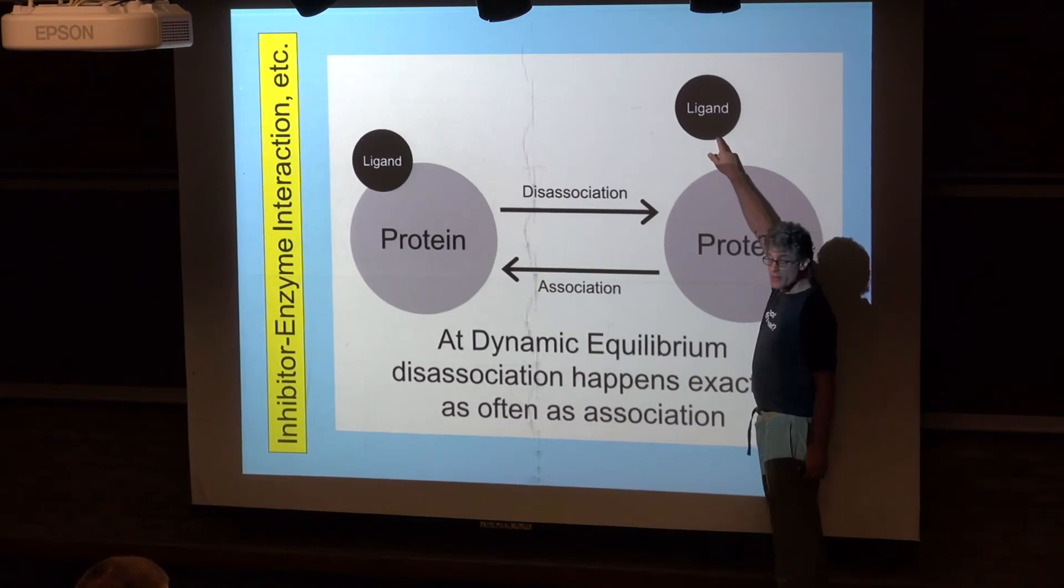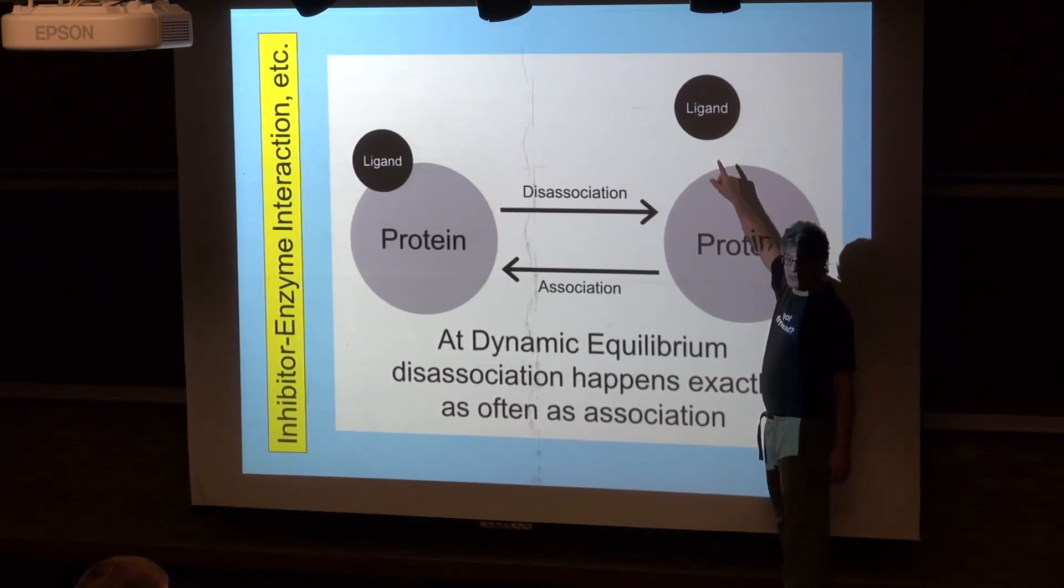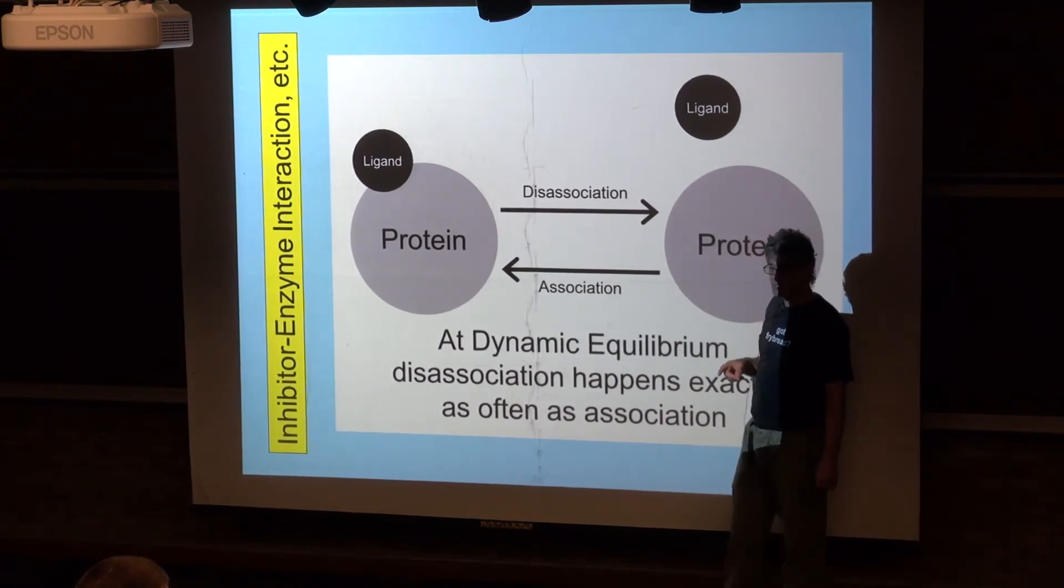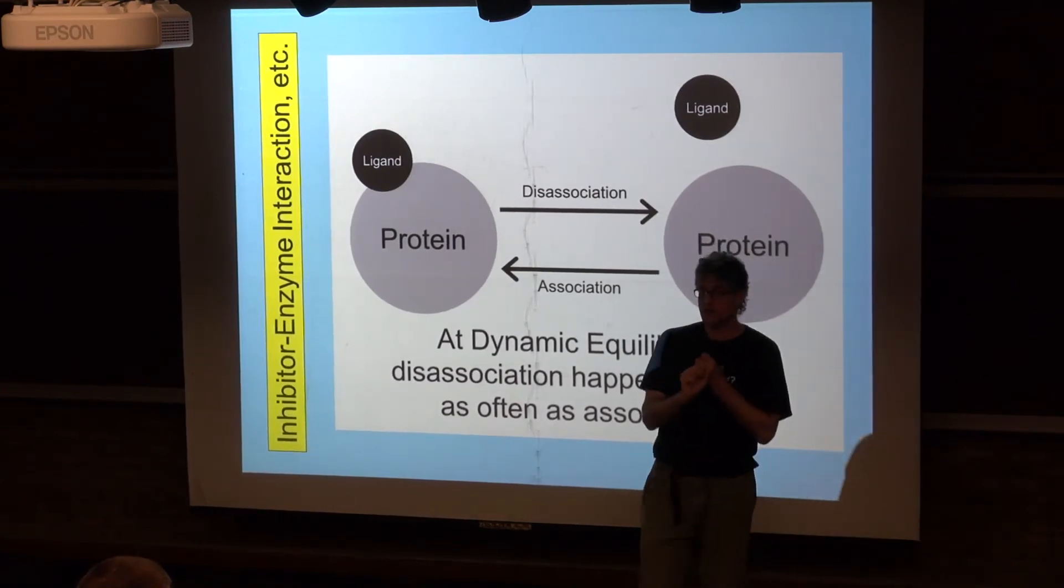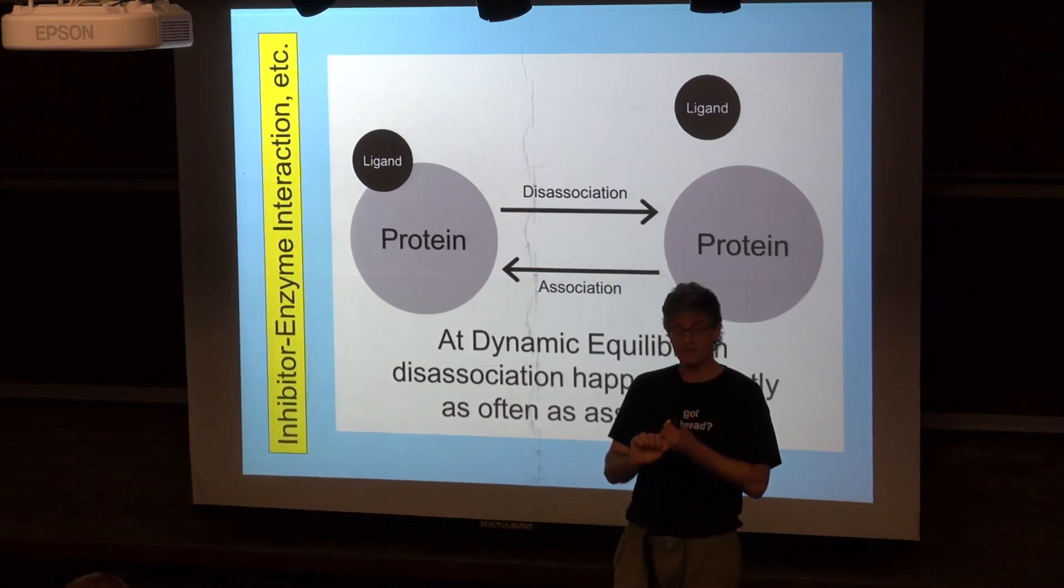Also, the amount of ligand around is important in determining whether there's binding to the protein. So you've got these two things: the affinity for the ligand and how much ligand is around.